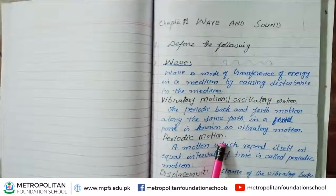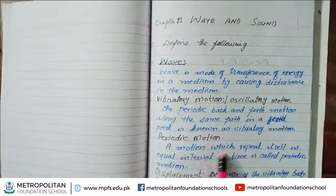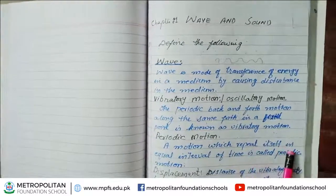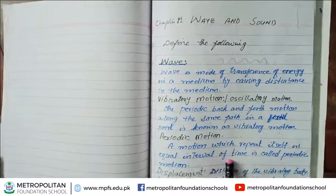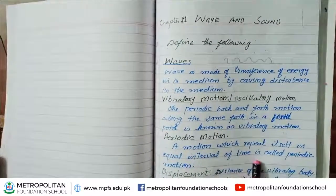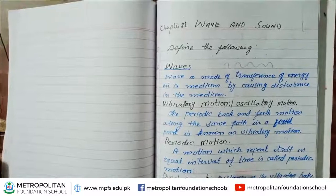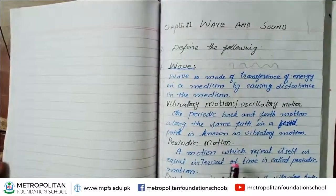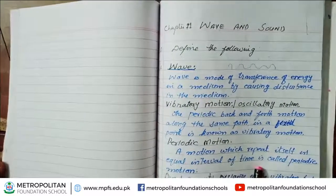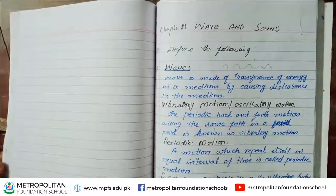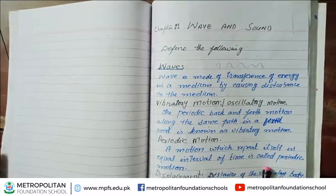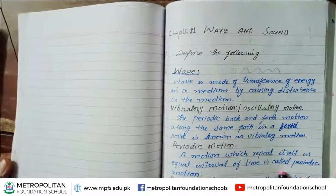What is periodic motion? Motion which repeats itself in equal intervals of time is called periodic motion. In a fixed interval of time, we call it periodic motion.